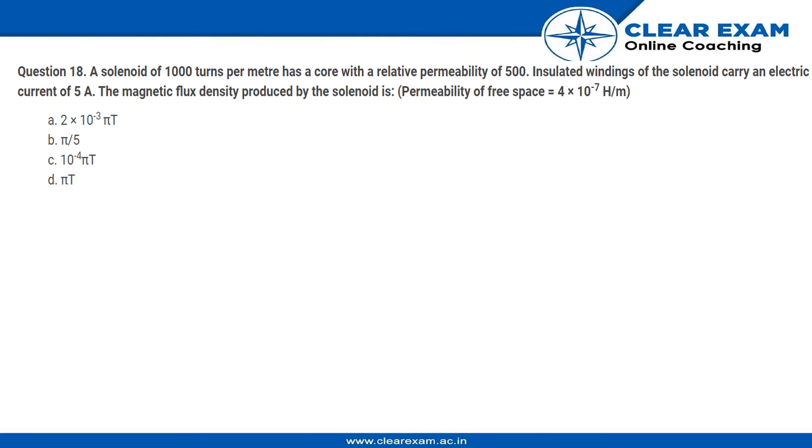Hello students, here is the question: A solenoid of 1000 turns per meter has a core with a relative permeability of 500. Insulated windings of the solenoid carry an electric current of 5 amperes. The magnetic flux density produced by the solenoid is? The permeability of free space is 4 × 10⁻⁷ henry per meter.